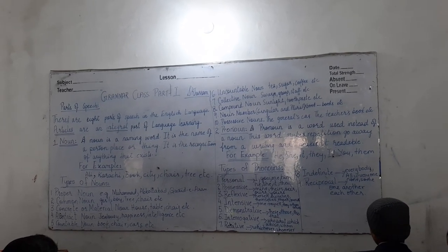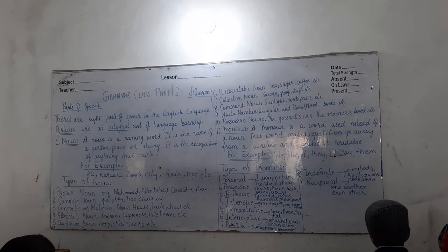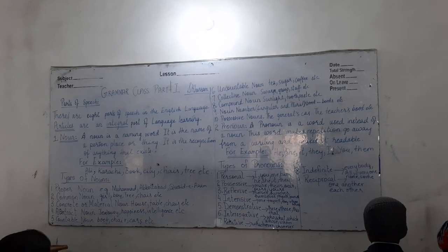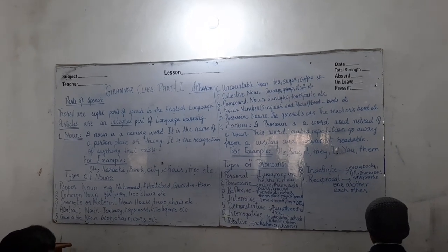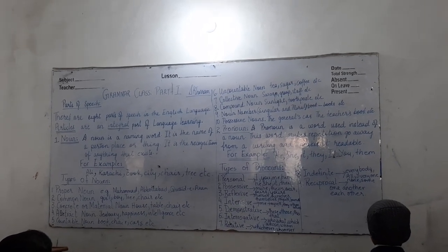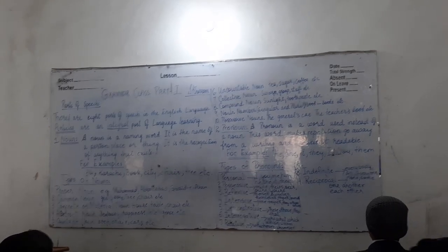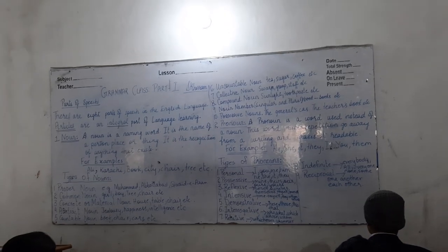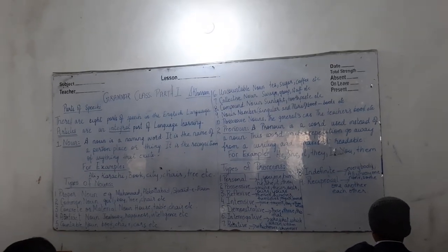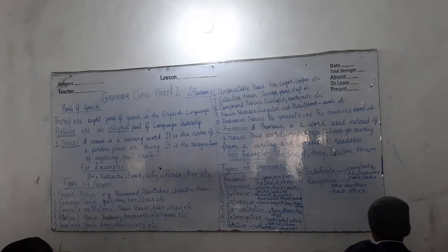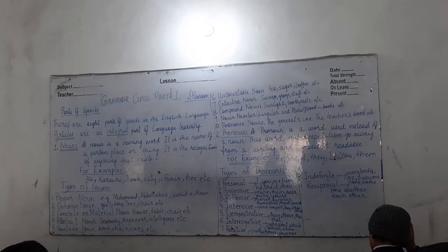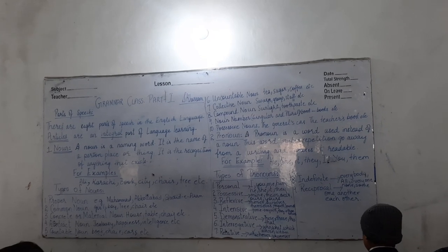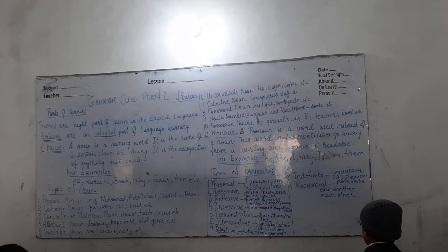Next is demonstrative pronoun: these, those, this, that, etc. Next is interrogative, which is the question form: who, what, which, whose, whom.